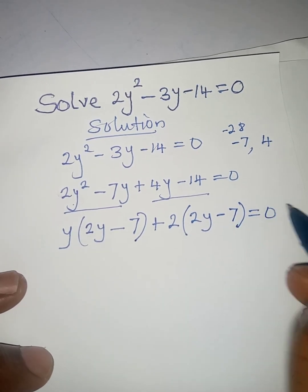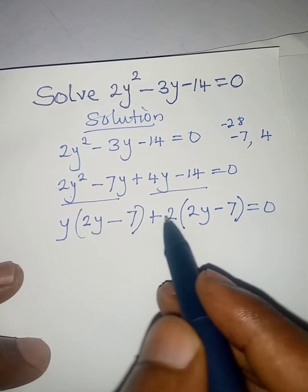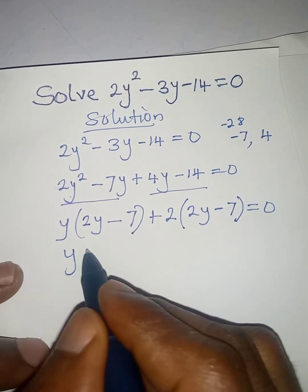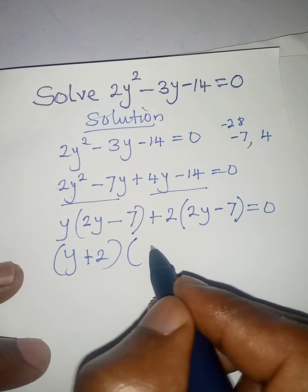So from here, the terms that are outside of the brackets, I will bring them together. So I will have (y + 2) in this bracket, then in the other bracket I will have (2y - 7), and they are both equal to zero.